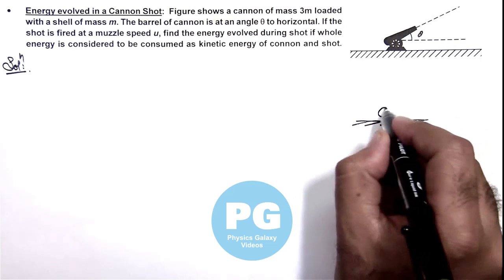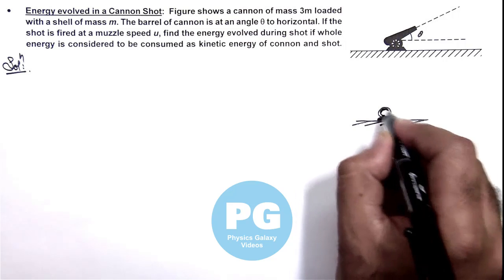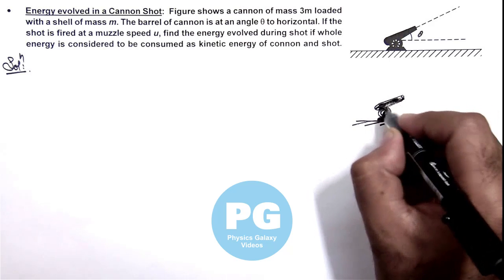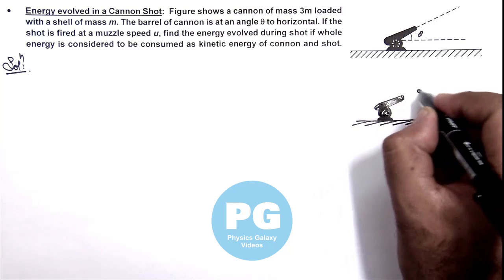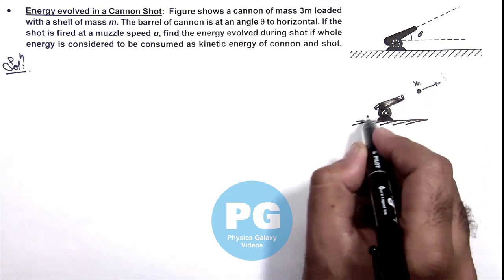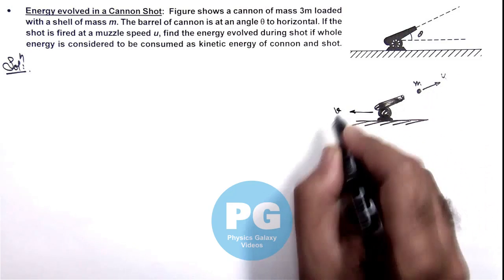If this is the cannon, and if cannon fires a shot which is of mass m, then we can see this m mass is fired at a speed u and due to which the cannon recoils with a speed v.